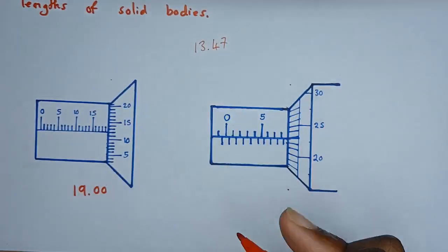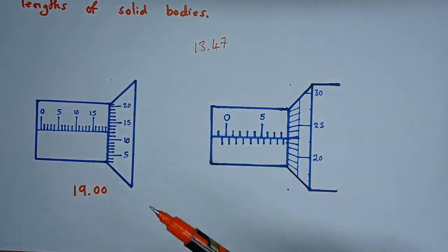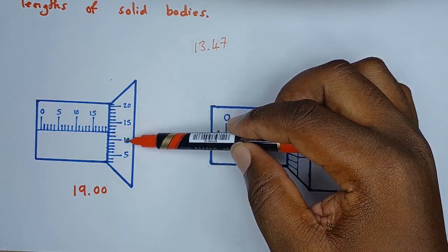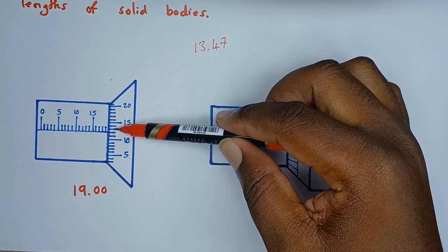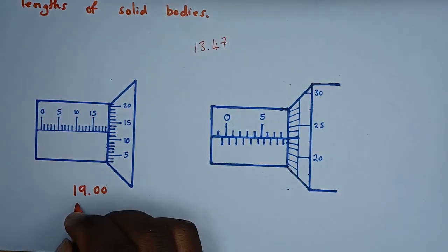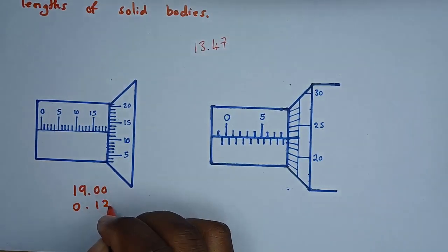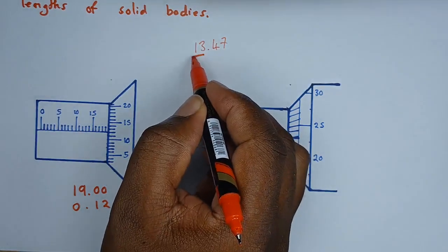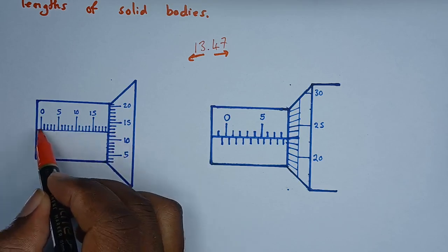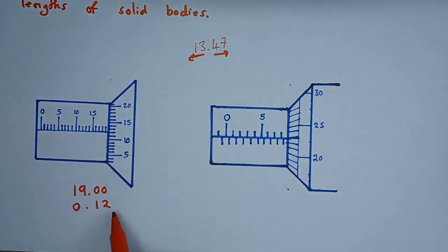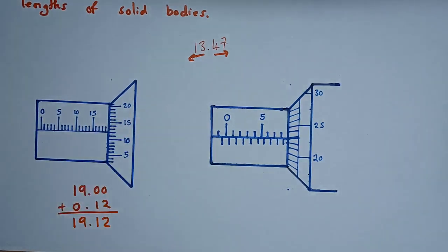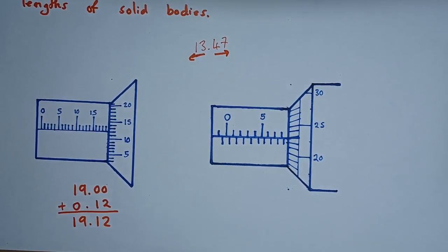On the thimble scale, look for the point where the reference line from the main scale is in line with a thimble marking. If this is 10 and this is 15, counting up: 11, 12 — so the thimble reading is 0.12. The values from the main scale come before the decimal point; the thimble gives the digits after. Adding 19.0 and 0.12 gives a reading of 19.12 millimeters.